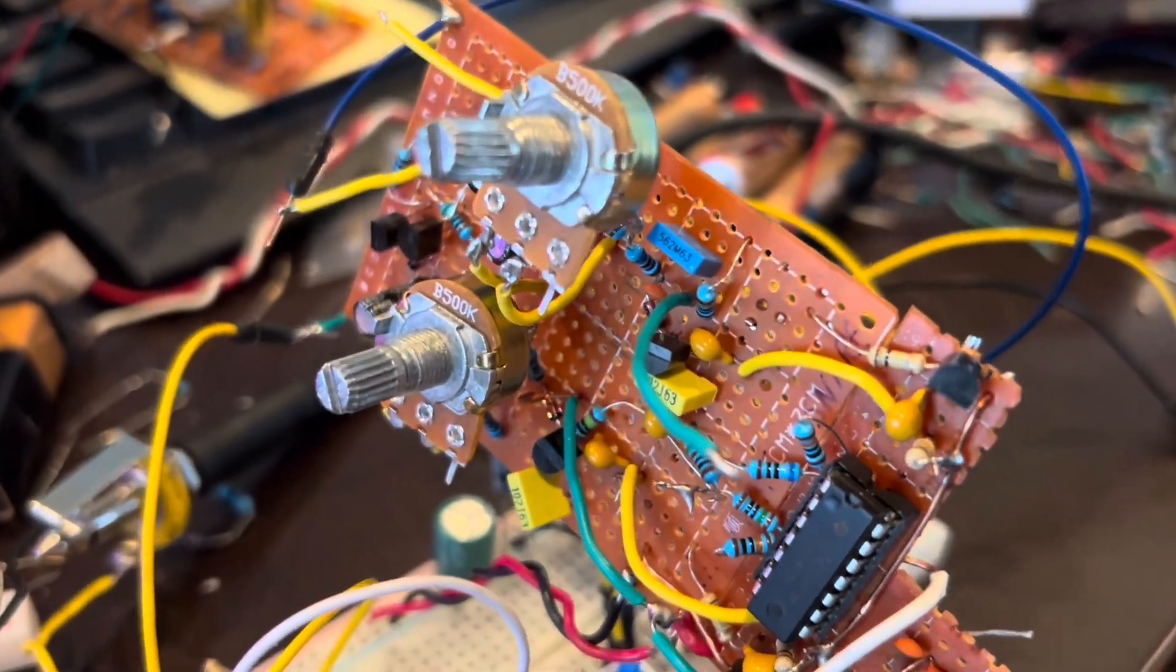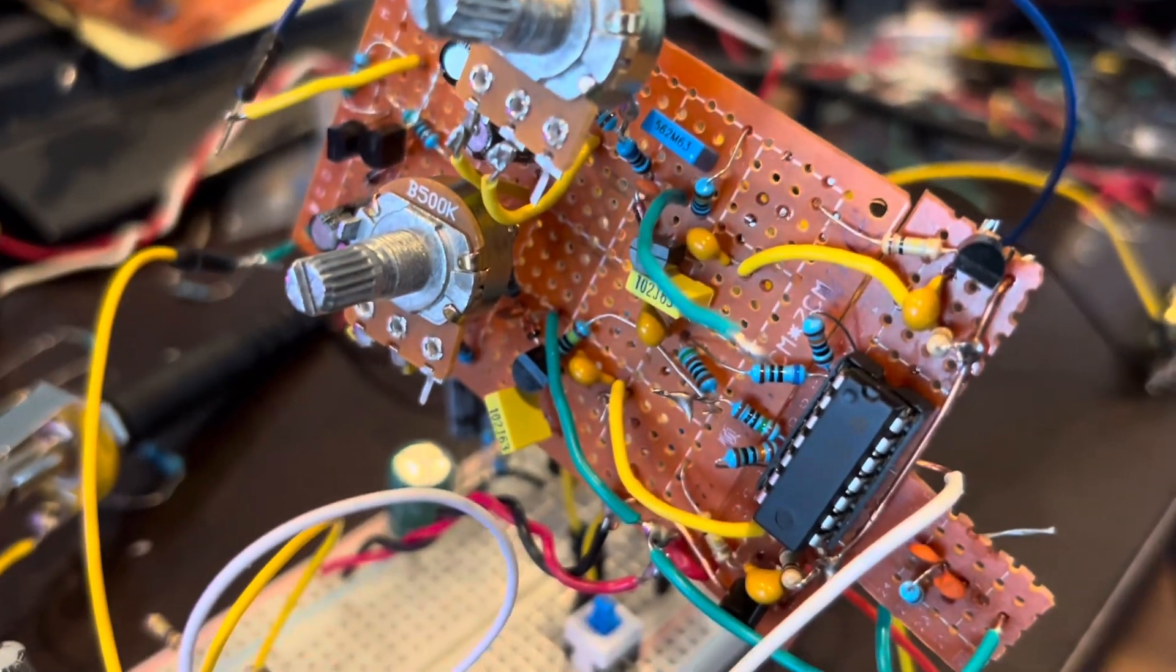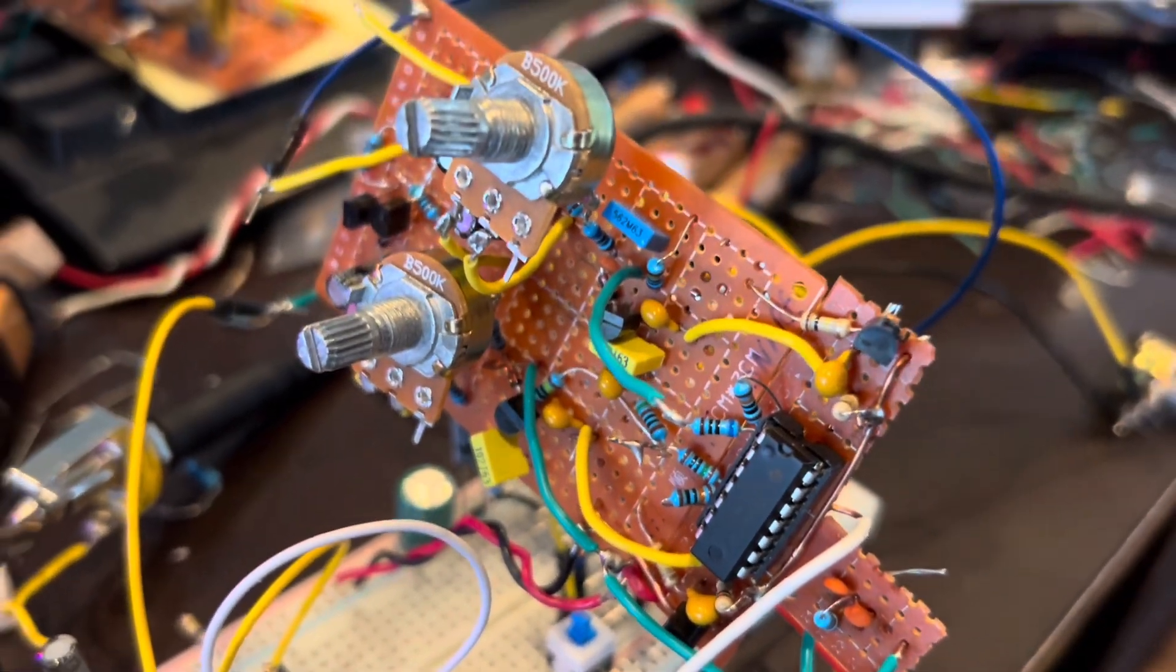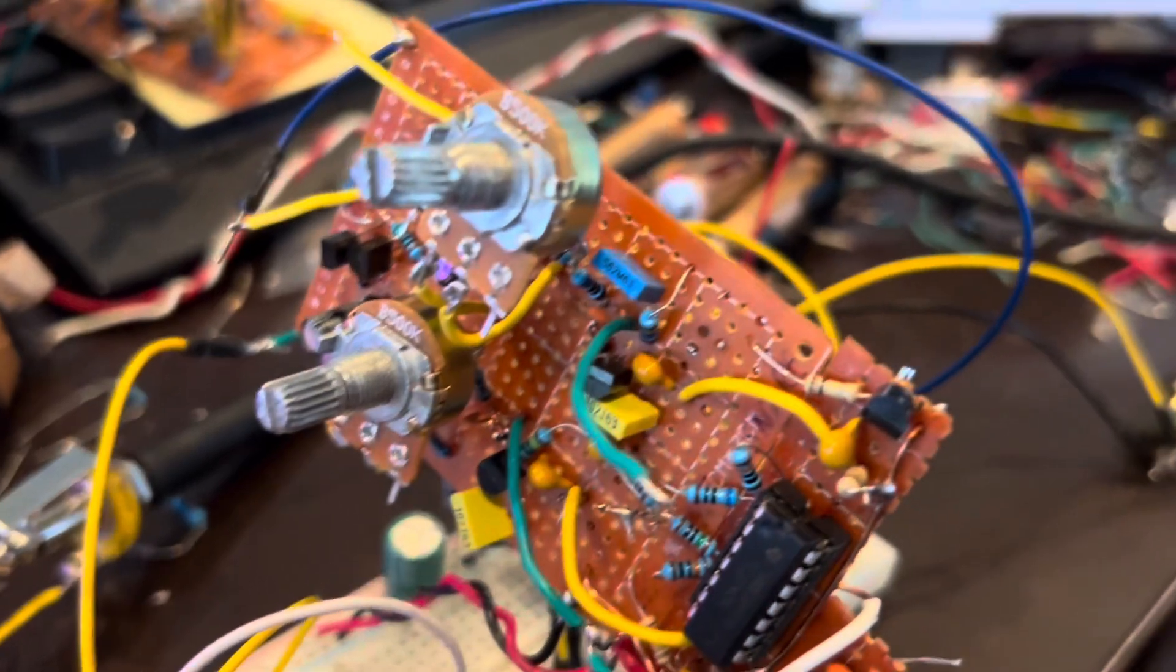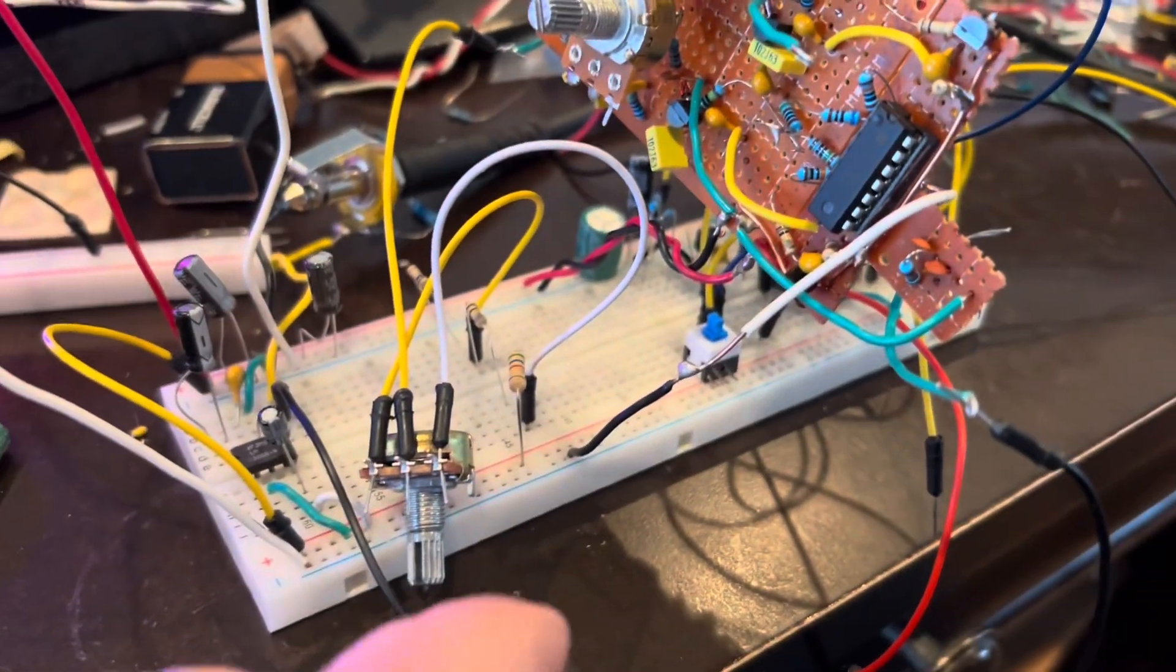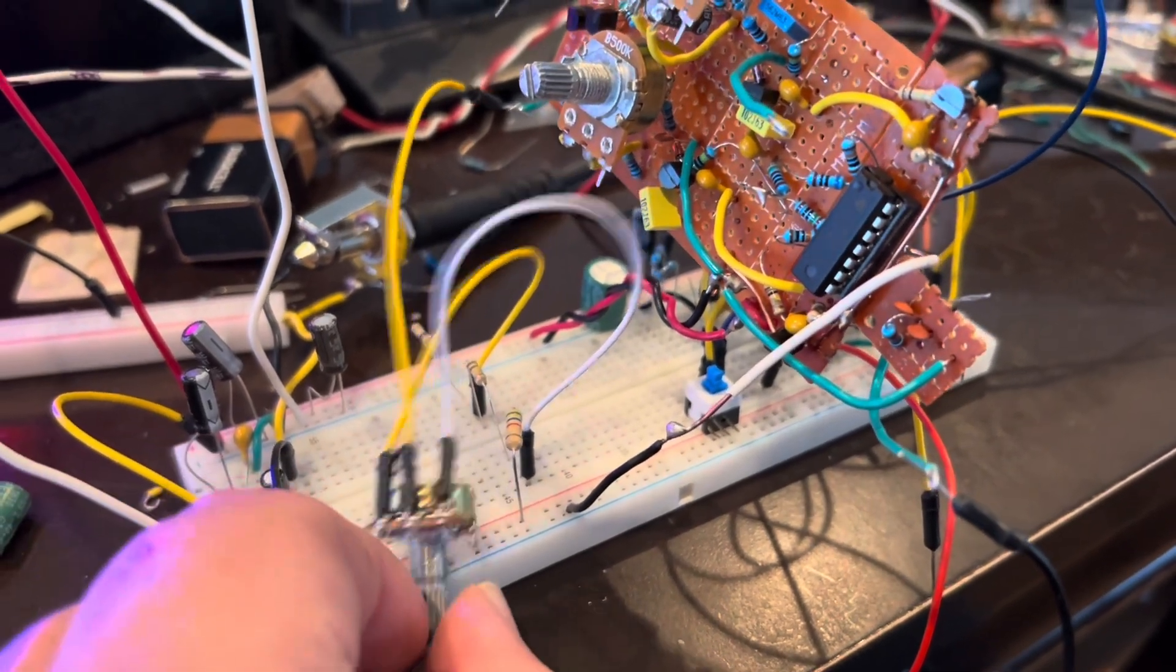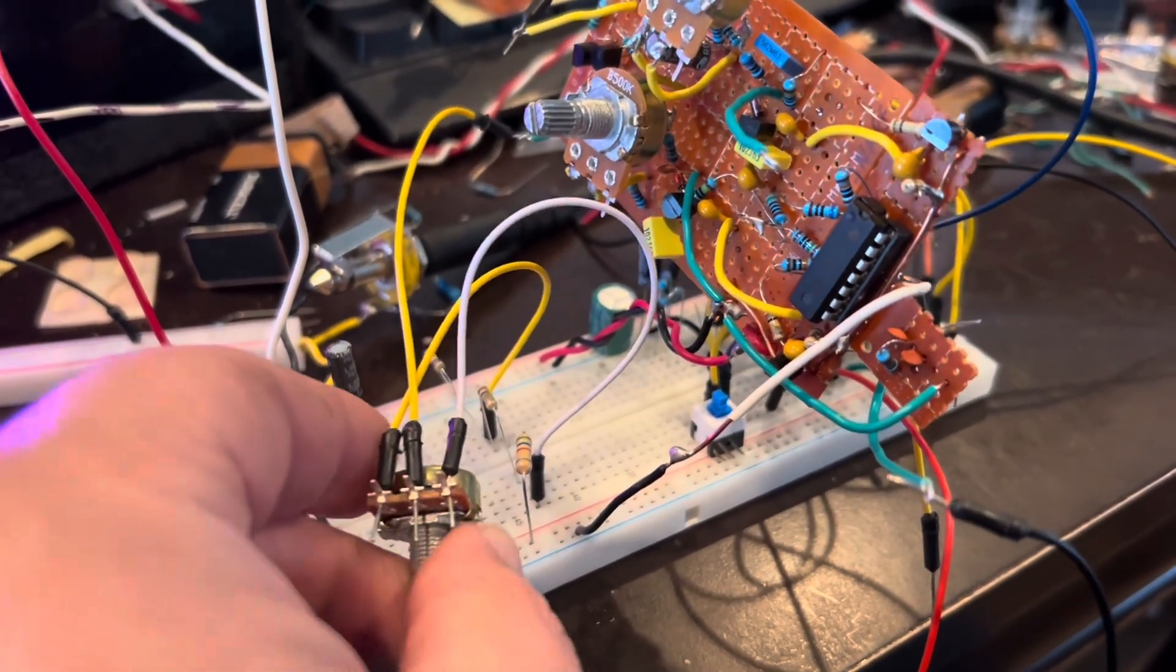So this is the closed hi-hat, the original one with the snare and the hi-hat circuit on a perf board with the control voltage added in. Now the control voltage, I have it being controlled by this at the moment. If I can move it around here.